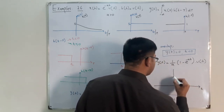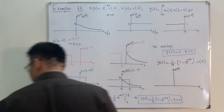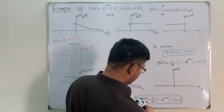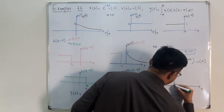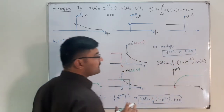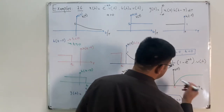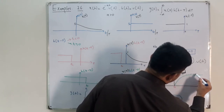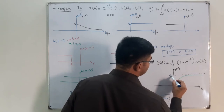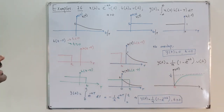Drawing the graph: y(t) = 0 for negative time, and for positive time it increases and asymptotically approaches 1/a. You can verify this in MATLAB. The asymptote — the value reached as t → ∞ — equals 1/a. This is the answer to example 2.6.